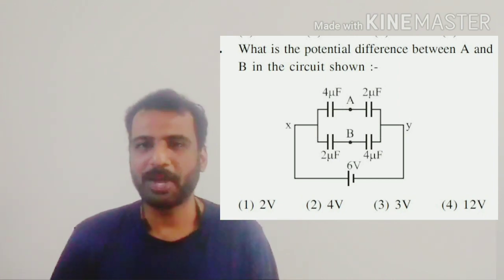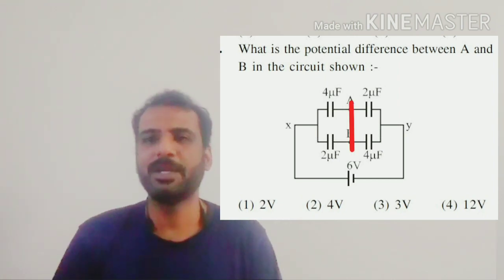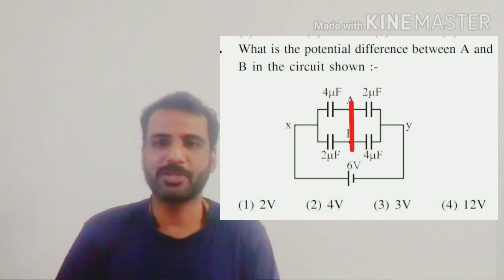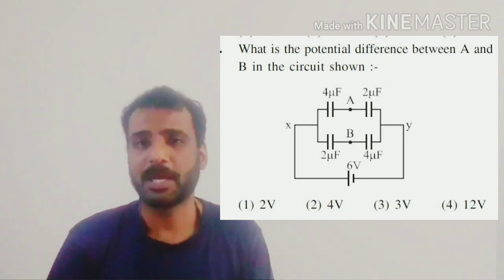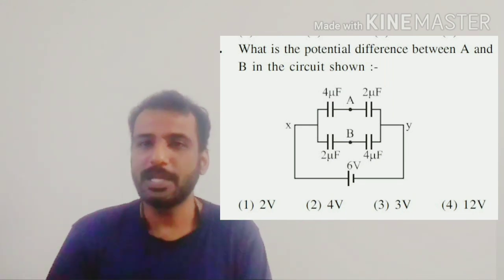But here in the given circuit we don't find anything connected directly between A and B. Then how do we find the potential difference between A and B? We can't use these expressions because nothing is connected in between A and B.